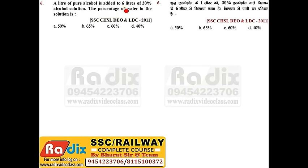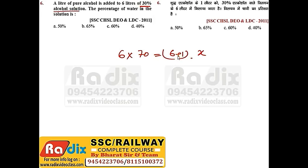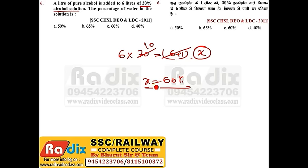Next question. 1 liter of pure alcohol is added to 6 liters of 30% alcohol solution. Find the percentage of water in the new solution. We are adding alcohol, so water stays the same. In 6 liters, 30% is alcohol meaning 70% is water. New total is 6 + 1 = 7 liters, water is x%. Solving: 6 × 70% = 7 × x%, so x = 60%. Since we need water percentage, the answer is option C.